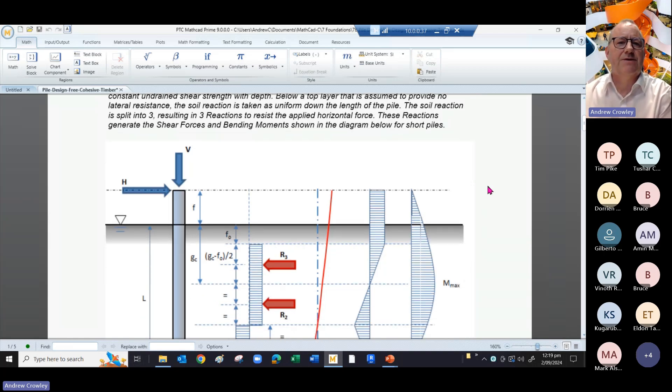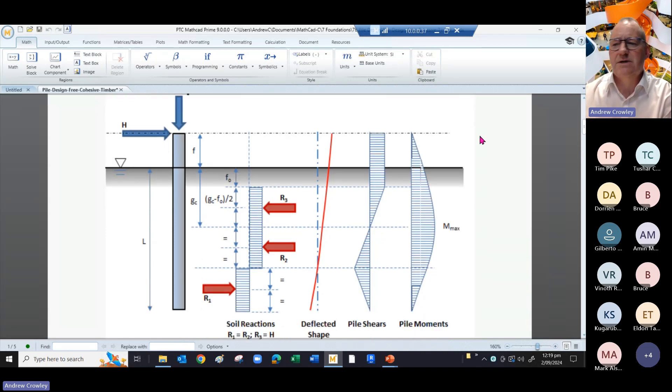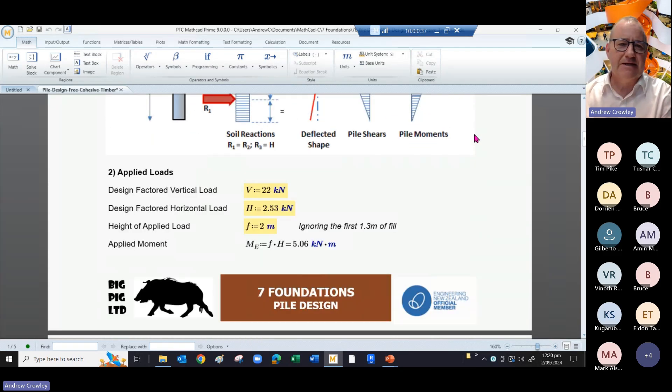The soil reactions are split into three, resulting in three reactions. The third reaction resists the applied horizontal force and they generate the shear forces and bending moments shown in the diagram below. This one, as we've seen before, is for short piles.